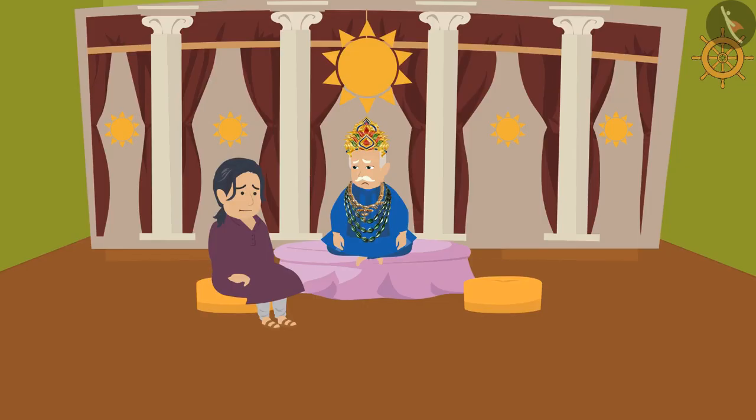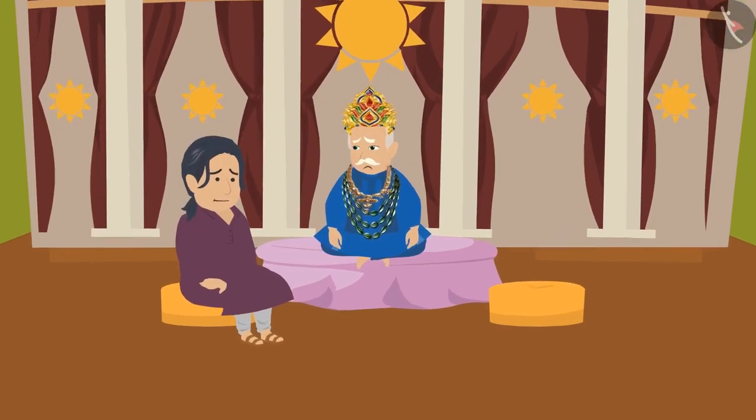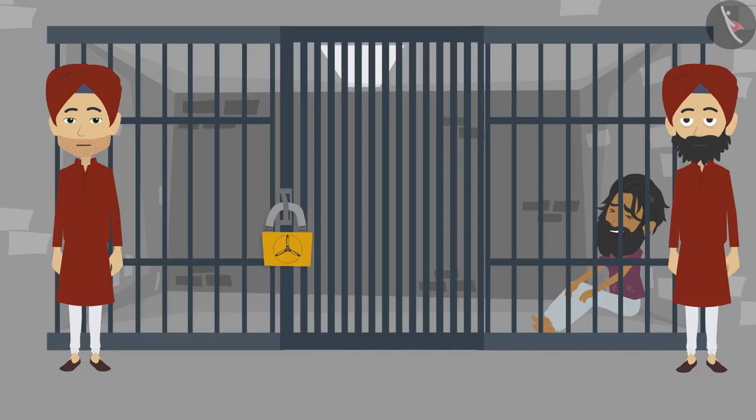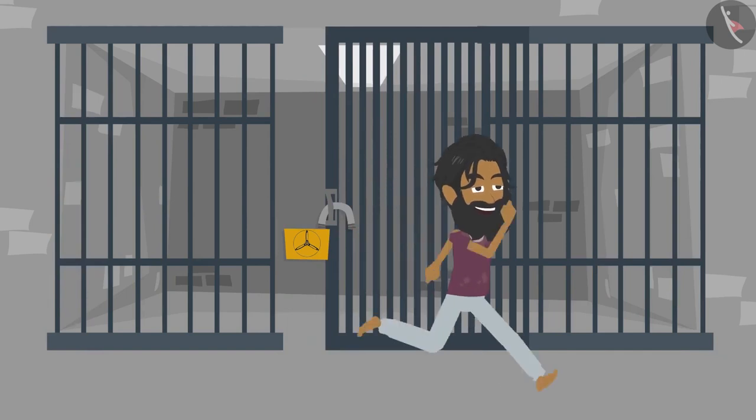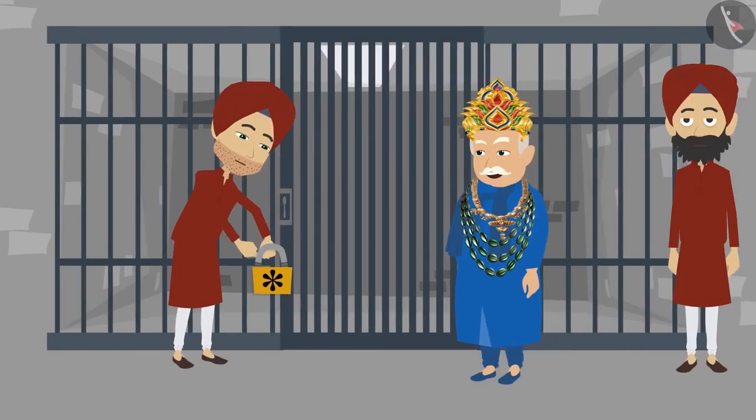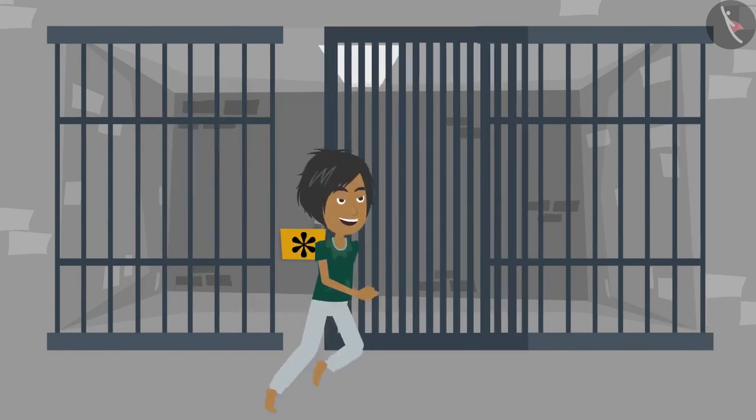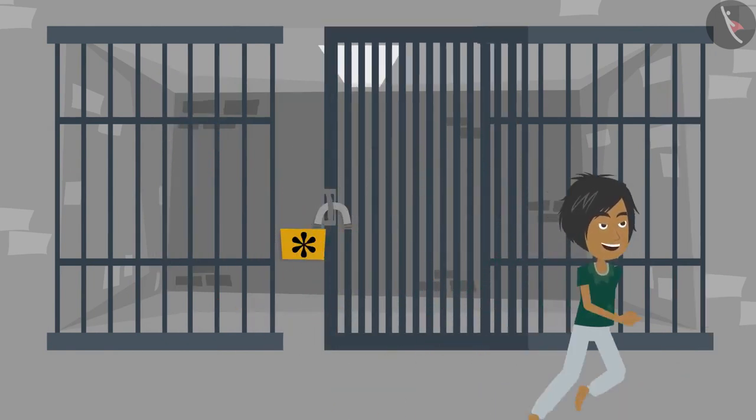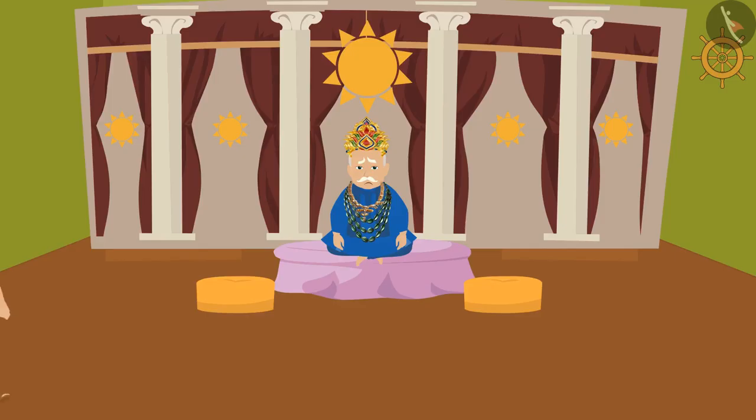Strange incidents were occurring in King Krishnadevaraya's kingdom. Though the security was extremely tight, criminals still kept escaping from the prison. The king tried to change the locks, but still the incidence of escaping from the prison did not reduce.